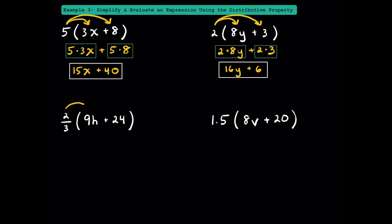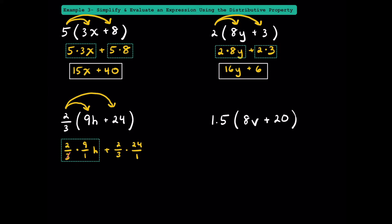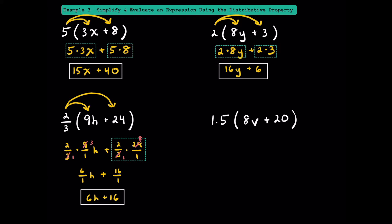For 2/3 times the quantity 9h plus 24, we distribute 2/3 to 9h and 2/3 to 24. Writing these as fractions, we cross-cancel: the 3 and 9 reduce to 1 and 3, giving 2 times 3 over 1, or 6h. Then for 2/3 times 24, we cross-cancel the 3 and 24 to make 1 and 8, giving 2 times 8 over 1, or 16. Simplified, this is 6h plus 16.